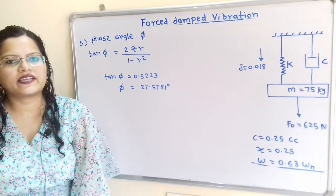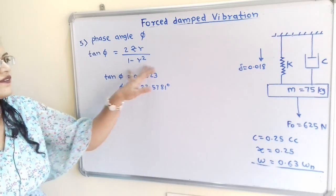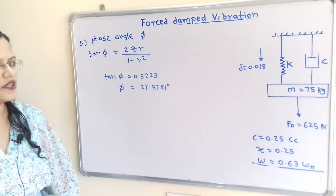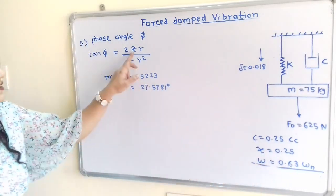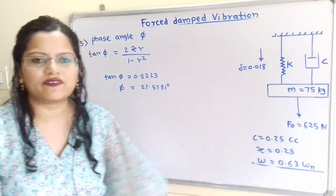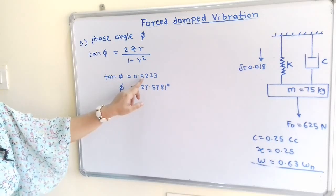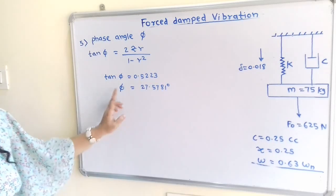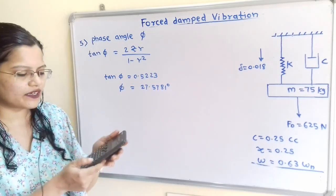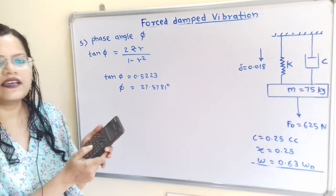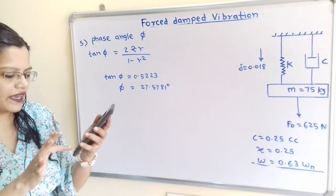Now calculate the phase angle φ. tan(φ) = 2ζR/(1 − R²). With R = 0.63 and ζ = 0.25, tan(φ) = 0.5223. Using the calculator (shift + tan for tan⁻¹): φ = tan⁻¹(0.5223) = 27.5781 degrees.